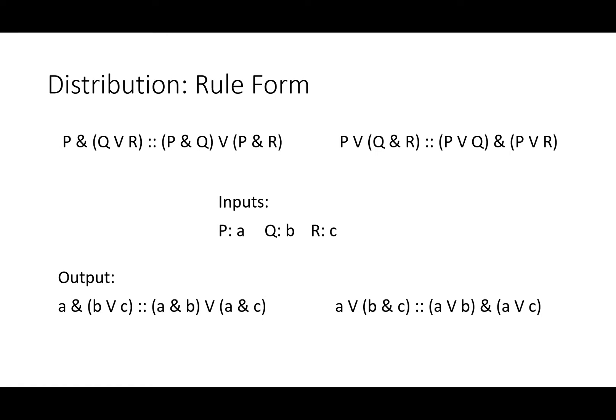We can see how this works with some very simple inputs: A, B, and C. On the left-hand side of the first rule, we have A AND (B OR C). On the right-hand side, we get (A AND B) OR (B AND C). A AND, and our choice between B or C, is represented on both sides, just in a different order. In the second rule, when we put in A for P, we get A OR (B AND C), which is the logical equivalent of (A OR B) AND (A OR C). All the same information is preserved from one side to another, although the order has changed.